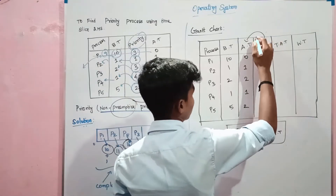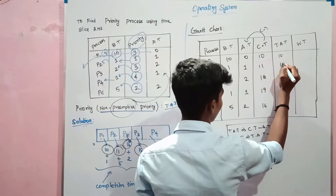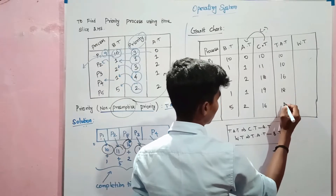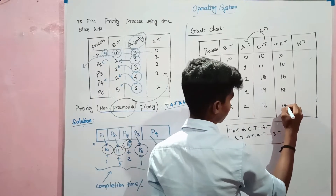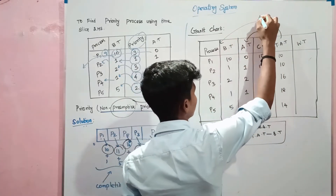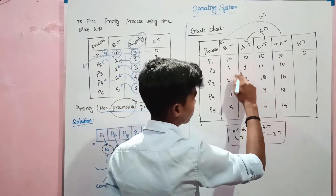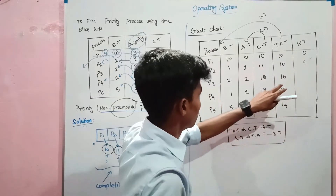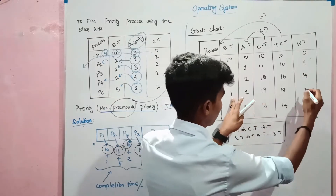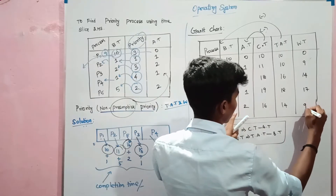Now, TAT. The formula CT minus AT: 10 minus 0 equals 10. 11 minus 1 equals 10. 18 minus 2 equals 16. 19 minus 1 equals 18. 16 minus 2 equals 14. Waiting time: 18 minus 1 equals 17. Then 14 minus 1 equals 17. Then 14 minus 5 equals 9.